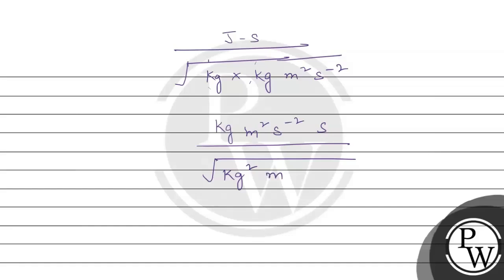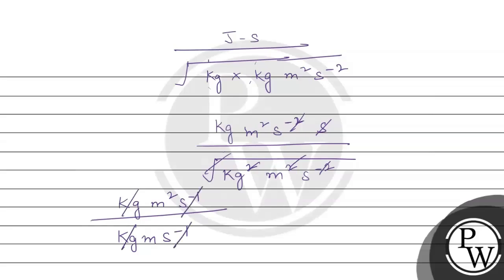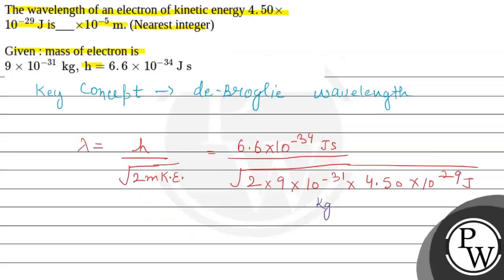Taking the square root of kg²·m²/s² gives kg·m/s. So in the denominator we have kg·m/s. The kilograms cancel, the seconds cancel, and one meter cancels — leaving the final result in meters. Good, the unit checks out.